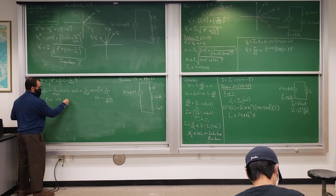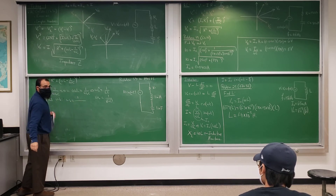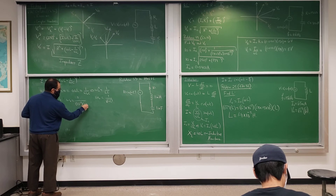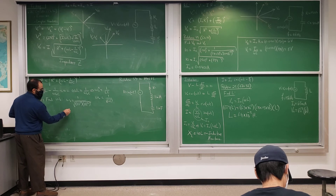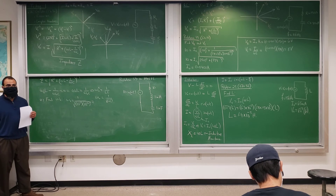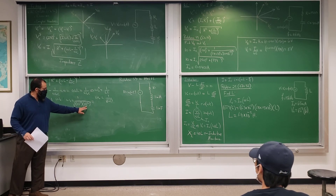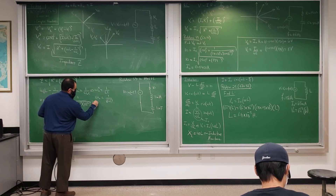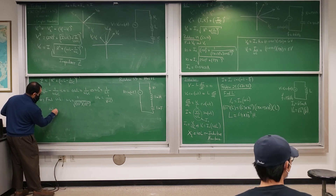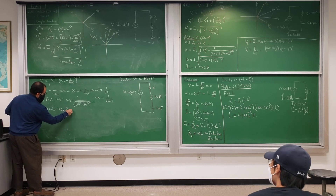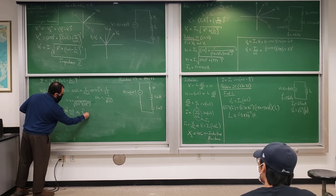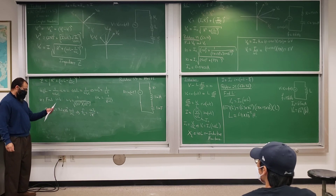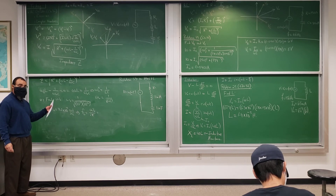That gives omega0 equals 3.2 times 10 to the 4 radians per second. The frequency f0 equals omega0 divided by 2 pi, and dividing by 2 pi gives approximately 5 times 10 to the 3 hertz, or 5 kilohertz.